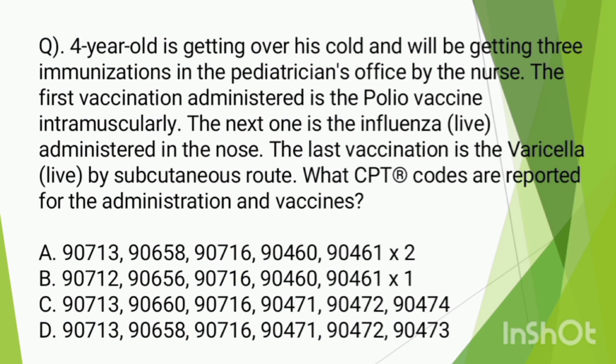Then we use code 90660 for the influenza virus vaccine, and code 90716 for the varicella vaccine. So with the polio vaccine, influenza vaccine, and varicella vaccine, the administration routes are correct. The answer is C.